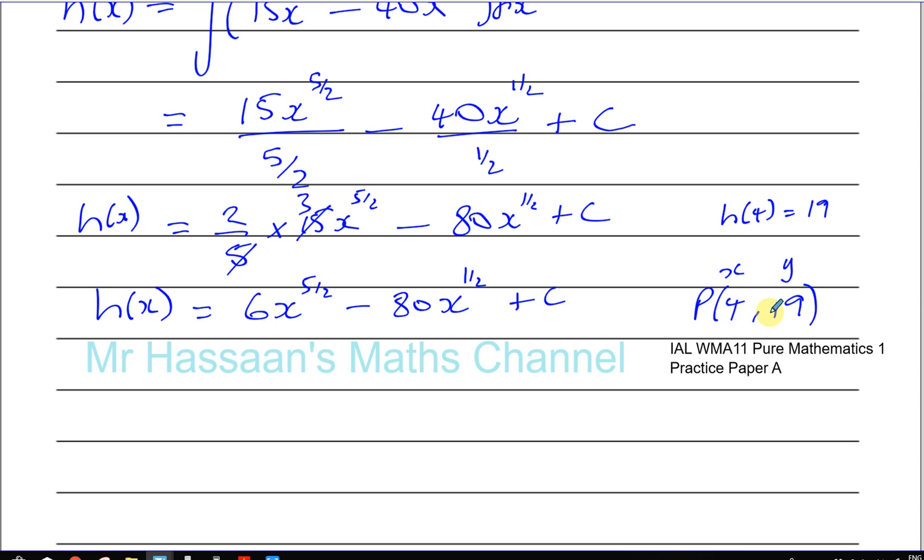All right, so I'm going to get 19 if I substitute 4 instead of x. So I have 6 times, now this is the same as the square root of 4 squared.